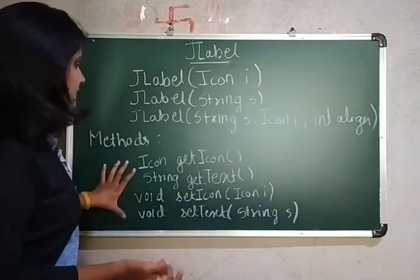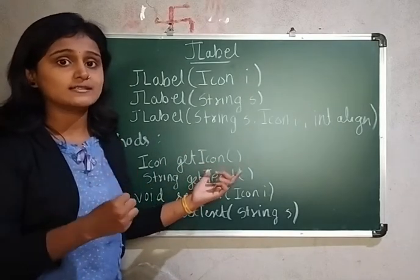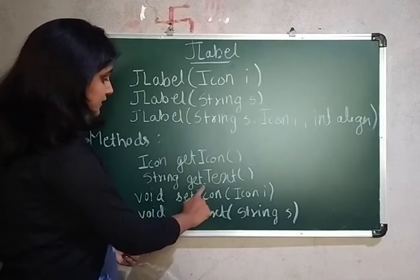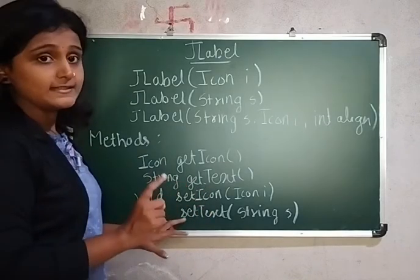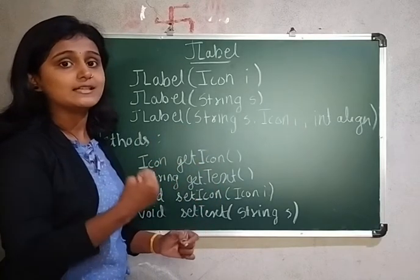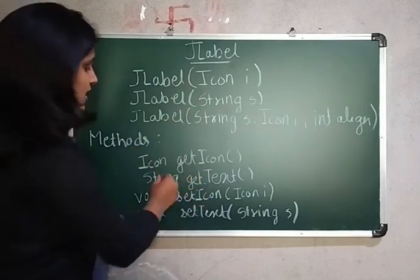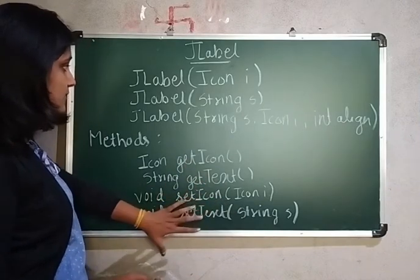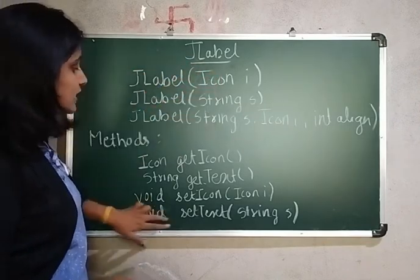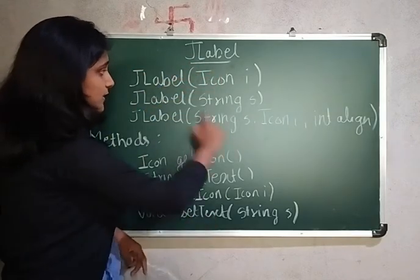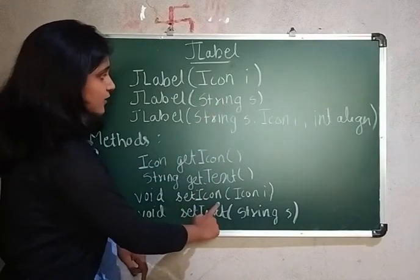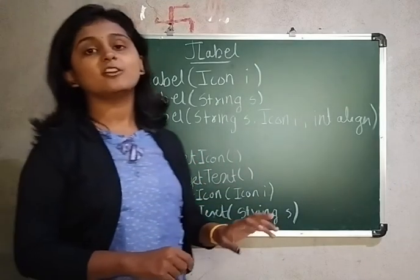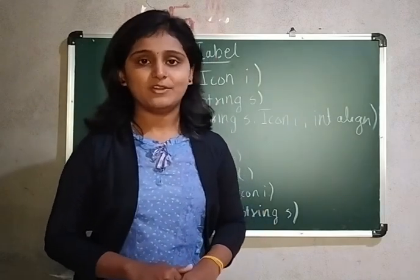Now the methods of JLabel: getIcon returns the icon currently set on the label with return type Icon. getgetText returns a String — the text currently on the JLabel. You can also use setIcon to set an icon on the label, and setText to set the text. So if you are using the text constructor but want to change the icon via method, you can use setIcon, and vice versa. This was regarding JLabel constructors and methods. If you have any questions, please mention them in the comment section. Thank you so much for watching.